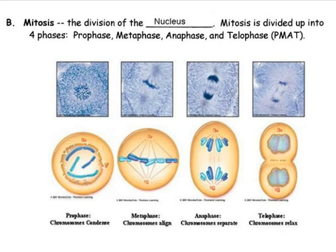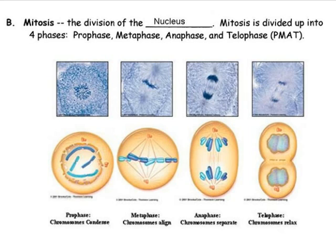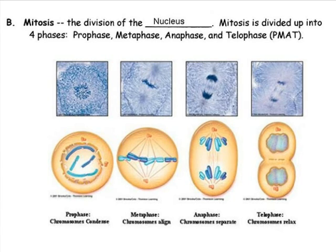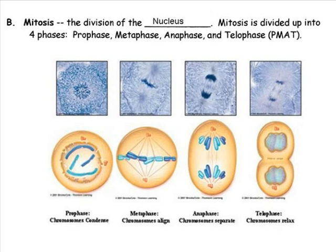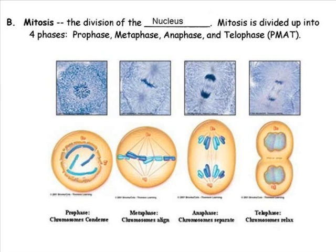During prophase, the chromosomes begin to form. At metaphase, they line up along the equator or center of the cell. During anaphase, the chromatids of each chromosome are pulled apart. At telophase, there are now two distinct nuclei and the cell is now ready to divide its cytoplasm.